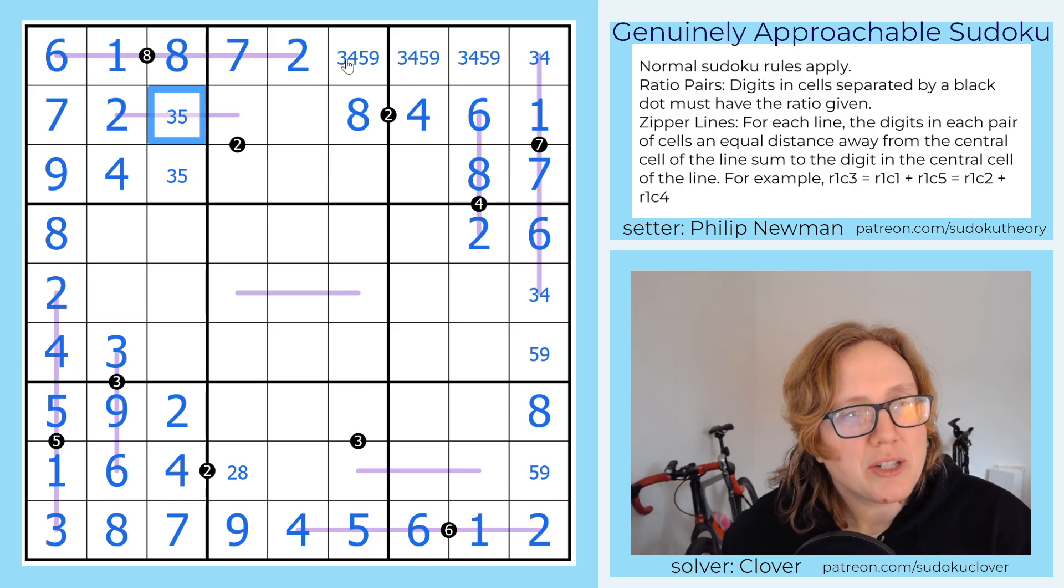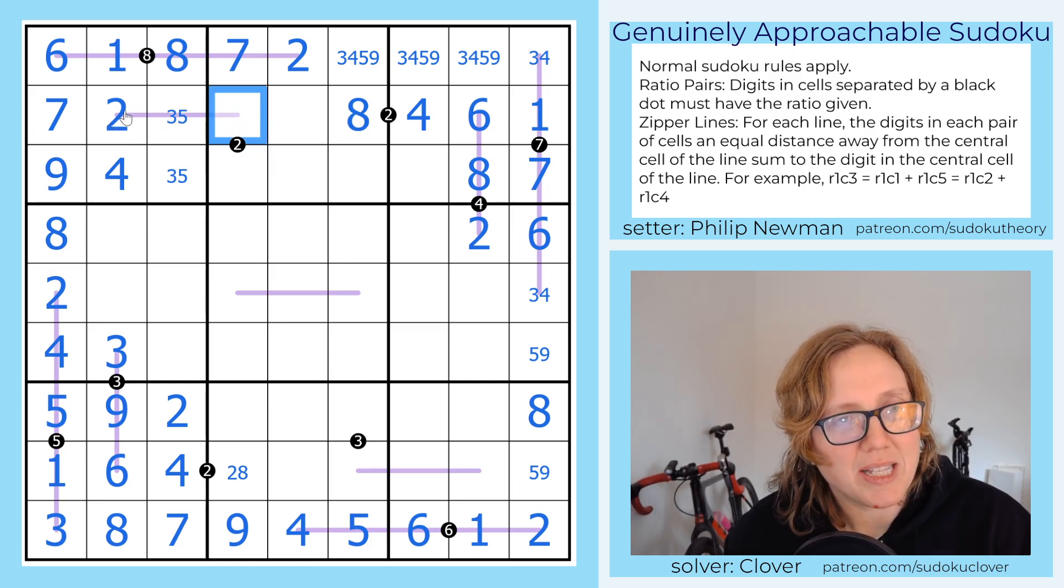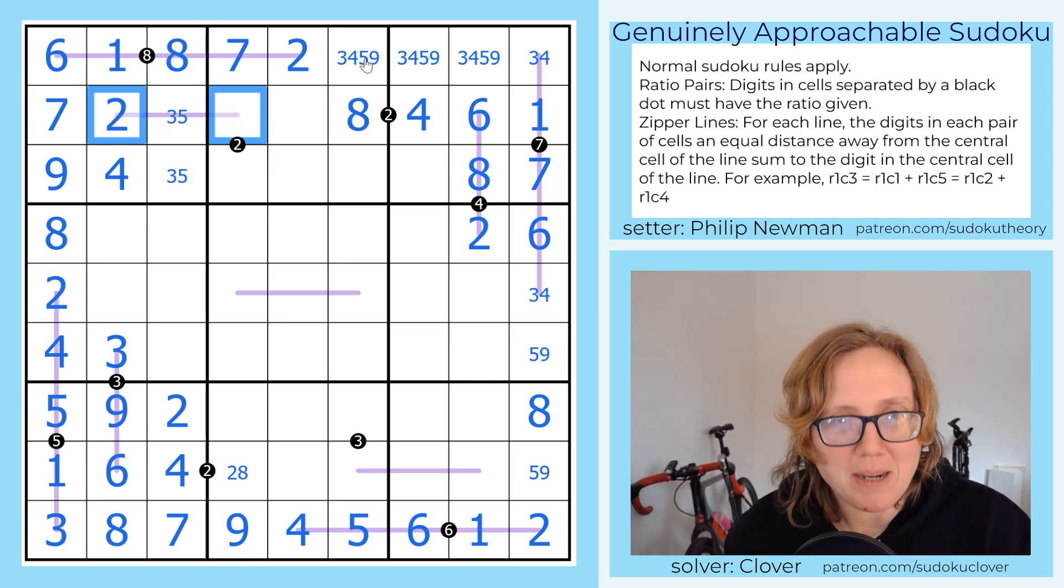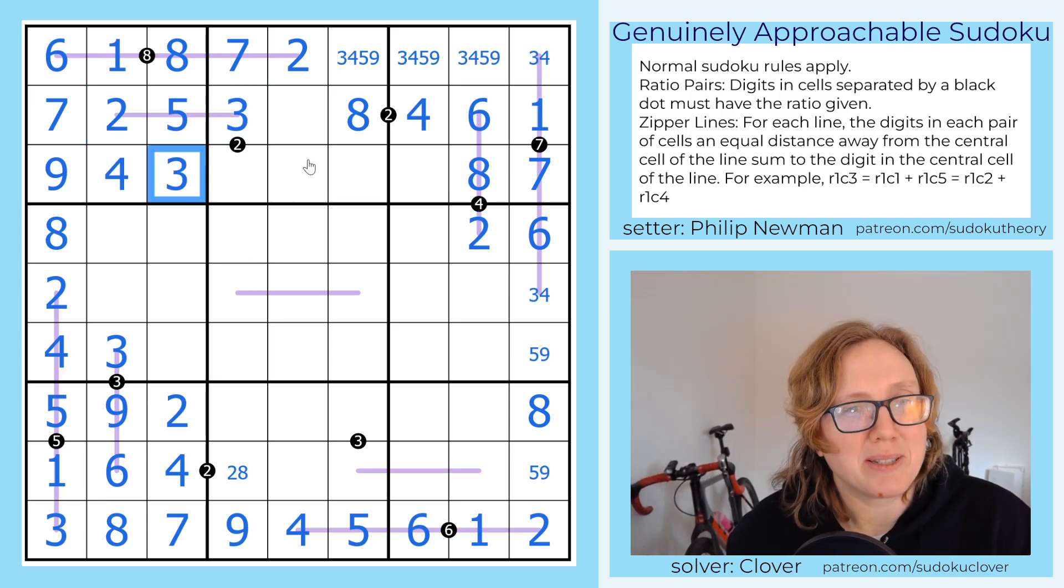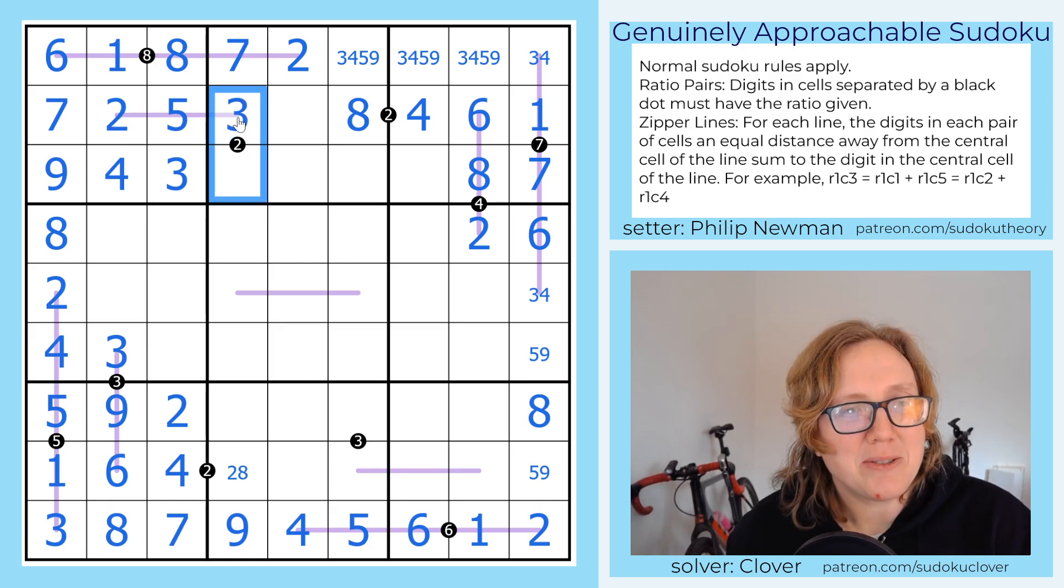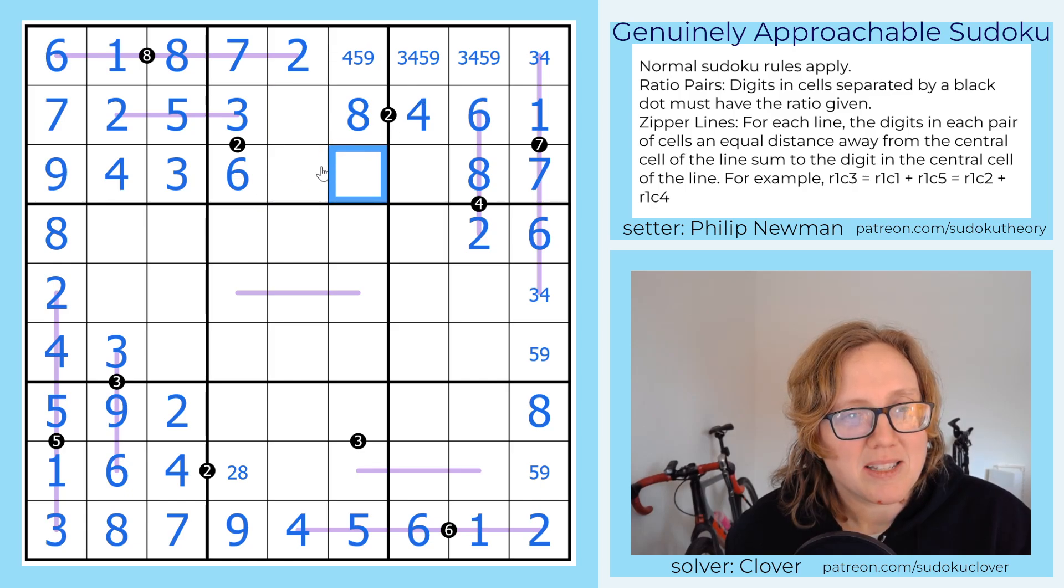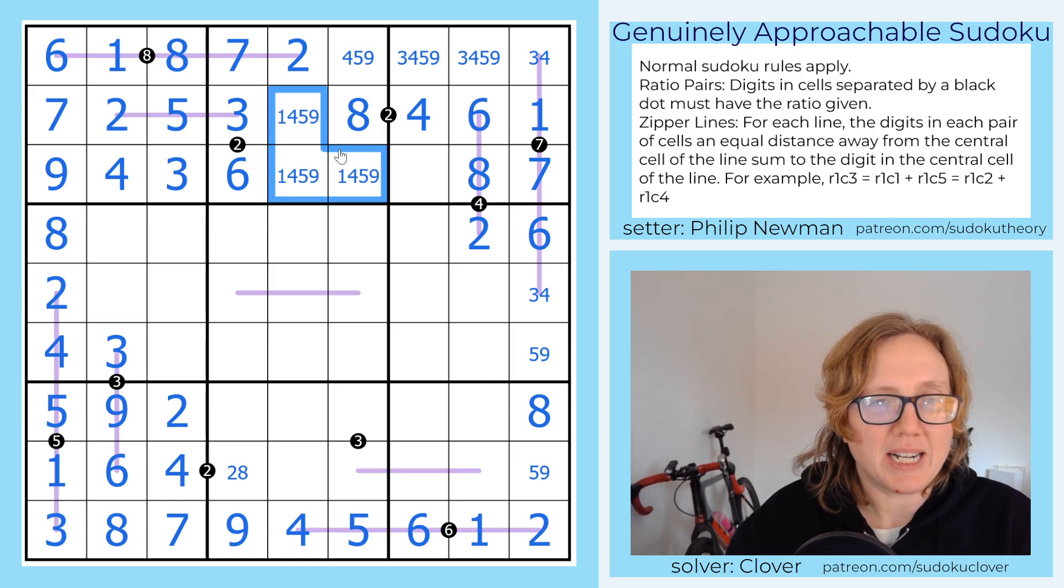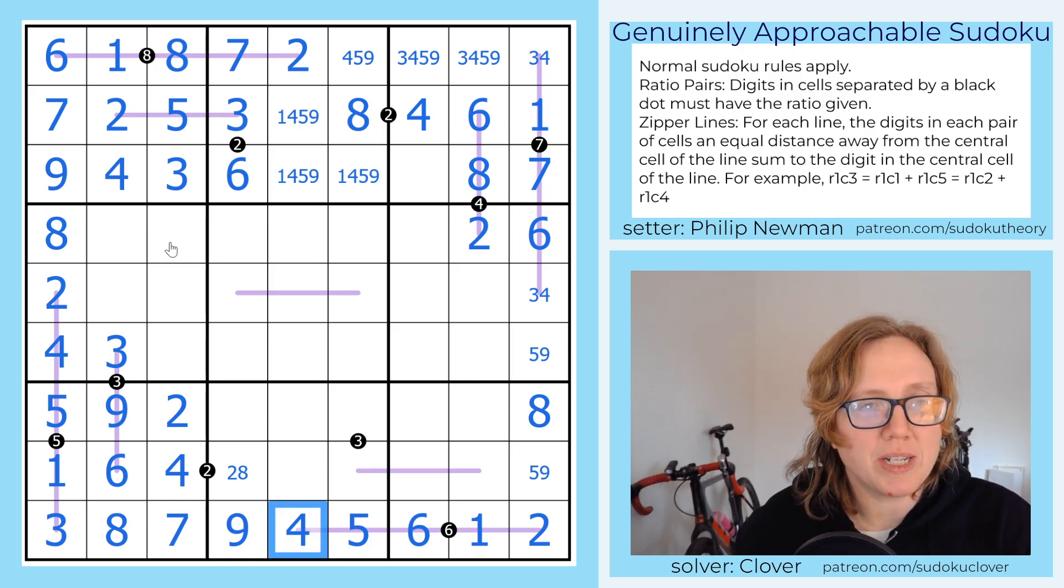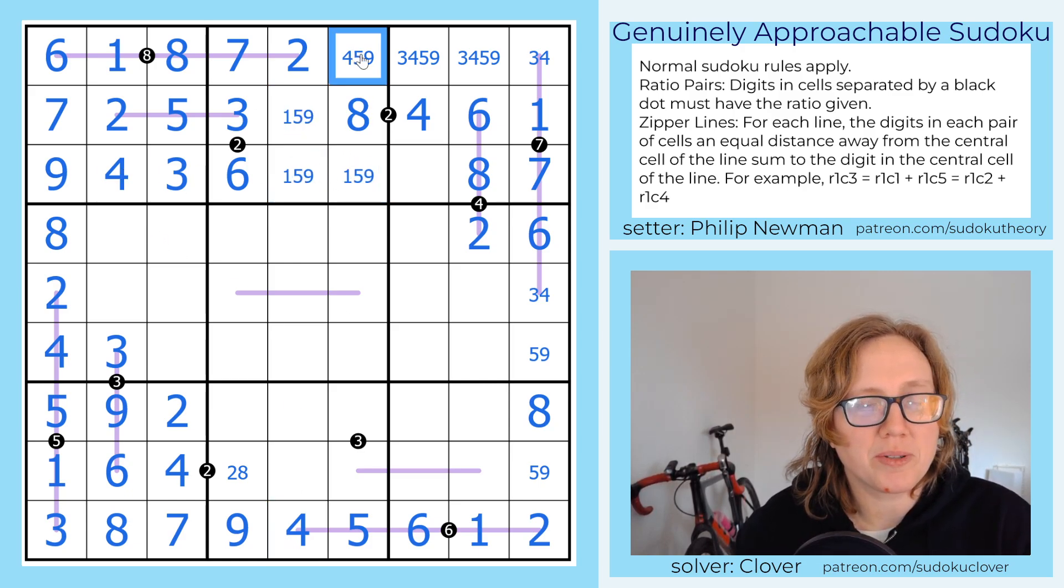Those can't be 2 and 4 because those are in the column, so these can't be 3 or 5. And now I have a 2, 4 pair, and I'm wondering if I strictly have to use this to solve. I'm going to go ahead and use it, though, because that just kind of popped up while I was solving. That's going to be an 8 and a 4 with a 2 there. Now, the central digit on this zipper line is either 3 or 5. If it was 3, though, these would have to sum to 3, so they'd have to be 2 and 1, and then we would have a problem because there's a 1 in the row. So that can't be 3. That must be 5 with a 3 here because 3 plus 2 is 5.